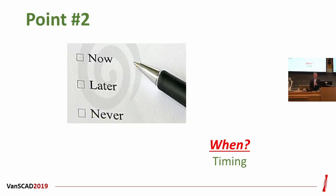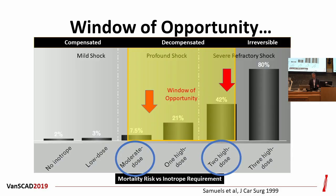The second point is timing. In cardiology, we talk about how timing saves muscle. When it comes to cardiogenic shock, once you start on one intravenous vasopressor, you're starting to get in trouble. Once you get to two, you're in big trouble. If you continue beyond that, you get to the point where there's no reversibility, and there's not much we can do. So there's a sweet spot as to where we can actually intervene.